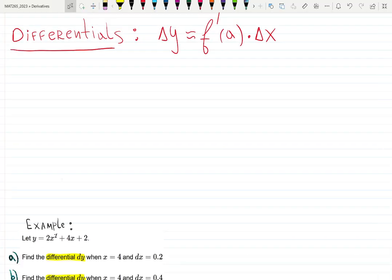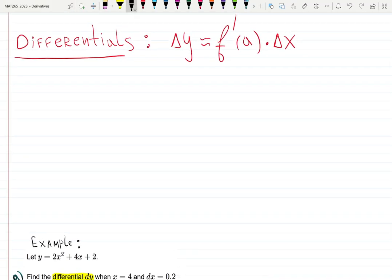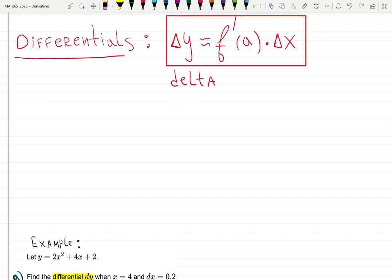So, differentials is how to approximate using differentials. Check this out. Basically, it's a formula for delta y. This little triangle is delta. It's called delta. We're going to learn in calculus 3 the upside down triangle. That's going to be del. It will be very cute. It indicates different derivatives.